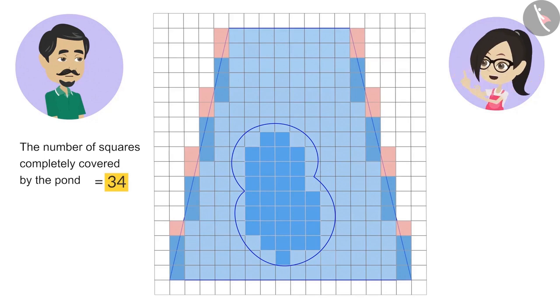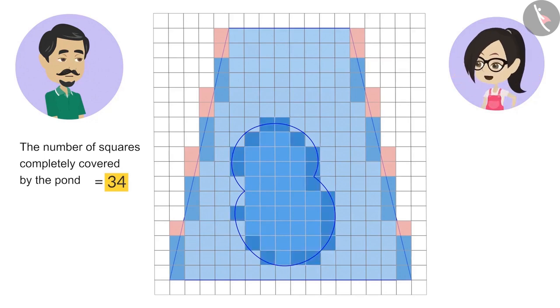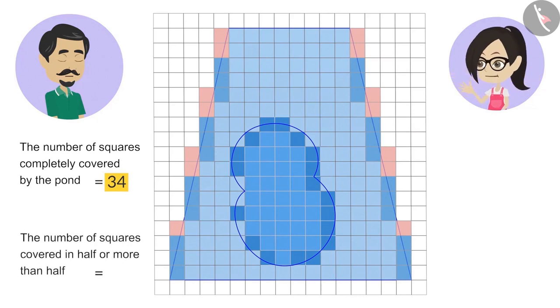Now, we will count the squares that are covered in half or more than half. Their number is 18. The number of squares that are covered less than half are not counted.